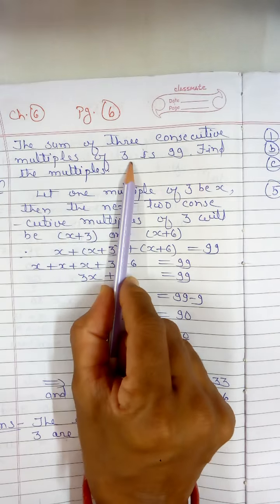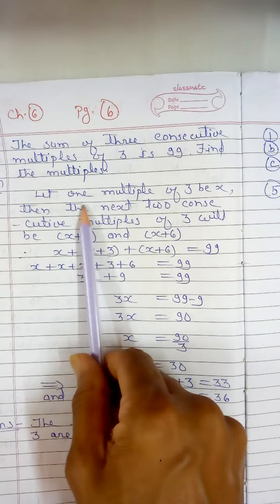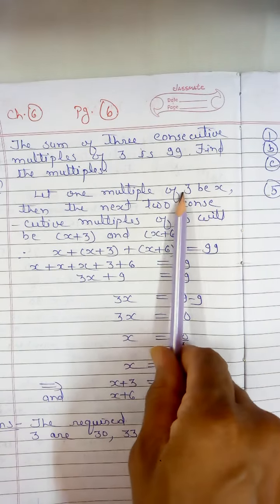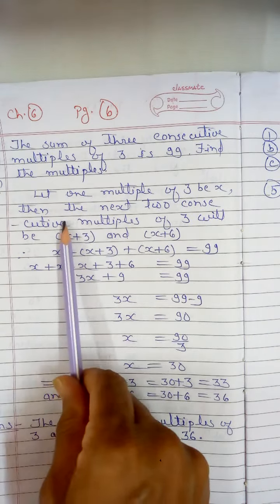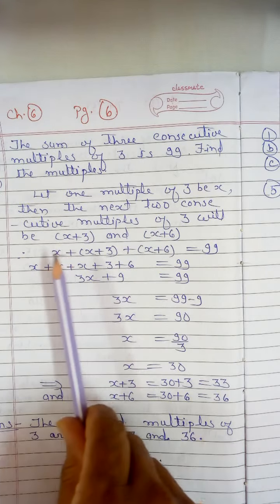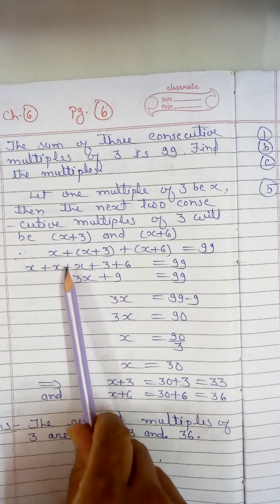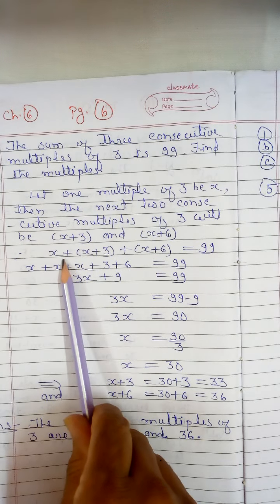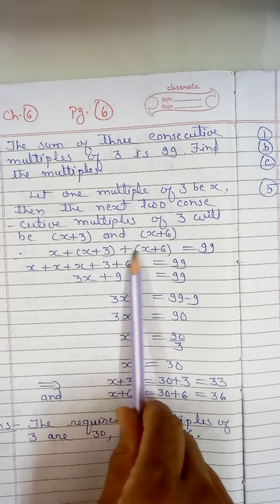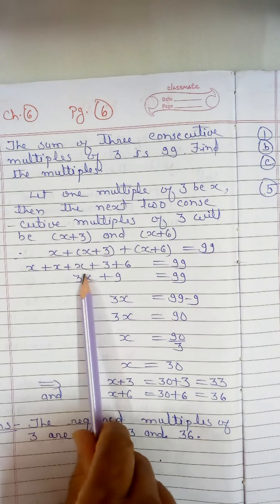The last question: the sum of three consecutive multiples of 3 is 99. Find the multiples. Let one multiple of 3 be x, then the next two consecutive multiples of 3 will be x plus 3 and x plus 6. So their sum will be x plus x plus 3 plus x plus 6 equal to 99.